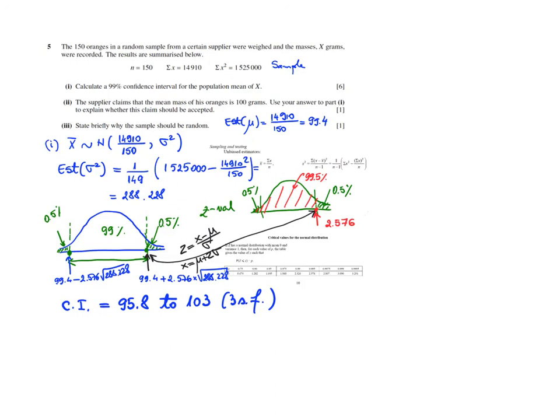Let's look at question number 2. This supplier claims that the mean mass of his oranges is 100 grams. Use your answer to explain whether this claim should be accepted. So 100 grams is in the middle of my confidence interval. So if you think of our hypothesis testing, this tells me that actually the mean mass of his oranges is pretty close to the mean that he claims. So I would accept his claim that the mean mass is 100 because 100 is contained within this confidence interval. So my answer here would be 100, the mean mass of his oranges, is in the confidence interval. Therefore, accept his claim, H0, right? His claim.